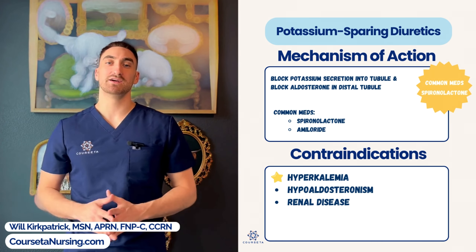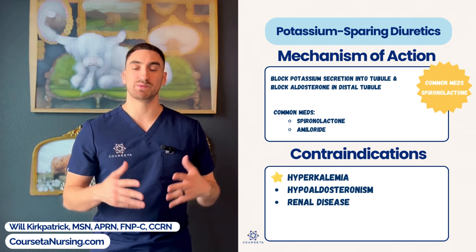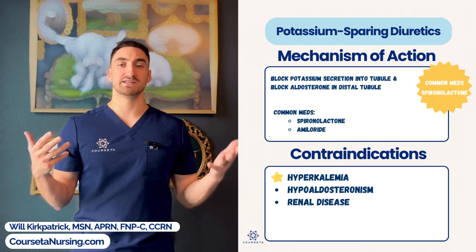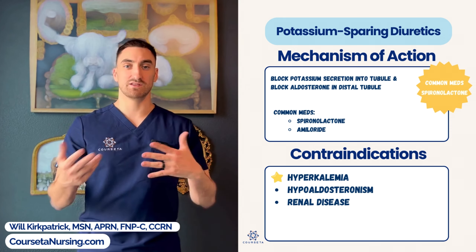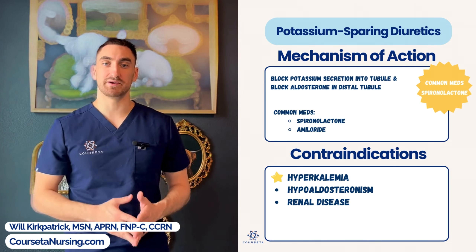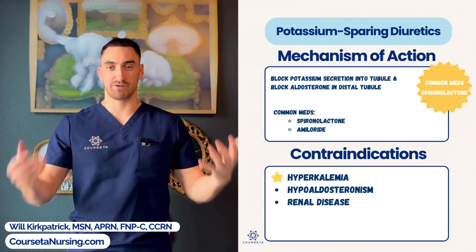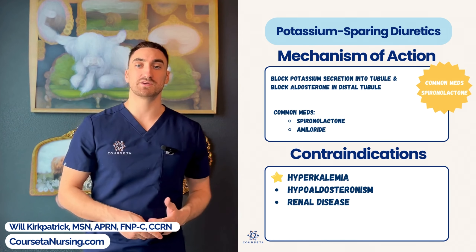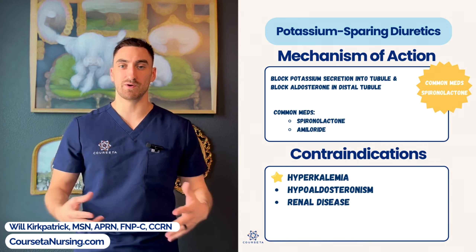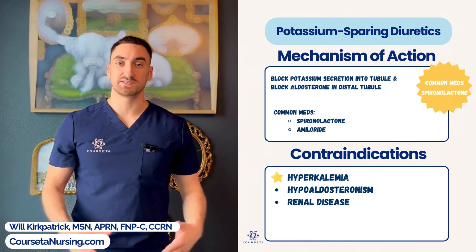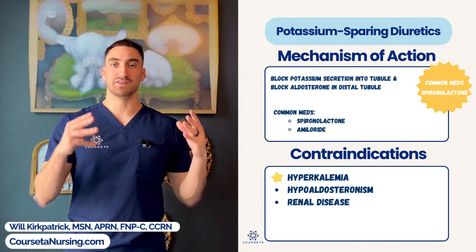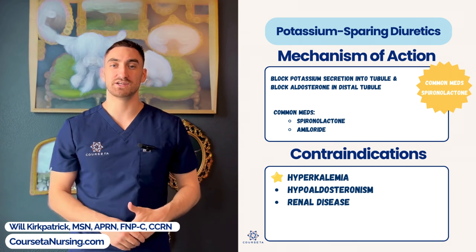The next one is a potassium-sparing diuretic — the name tells you exactly what it is. It's a diuretic we use when we want to spare the potassium, unlike loop diuretics that get rid of it aggressively. It's used for patients with a long history of hypokalemia, and is typically used in adjunct rather than as a sole therapy. The mechanism of action is that it blocks potassium excretion by blocking aldosterone in the distal tubule. The primary medication to remember is spironolactone. Since it prevents potassium excretion, the adverse effect is hyperkalemia — and it's contraindicated in patients with hyperkalemia.